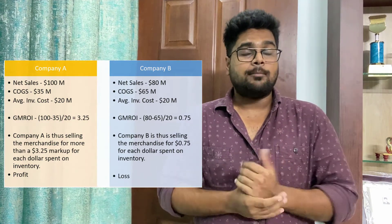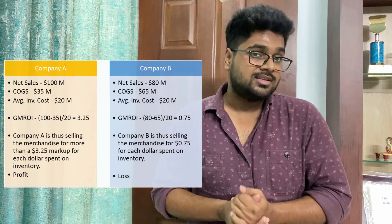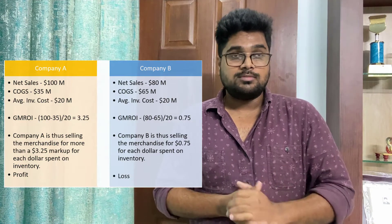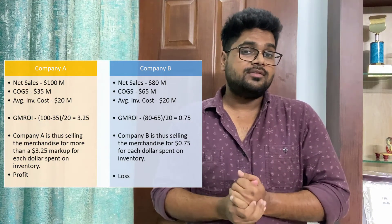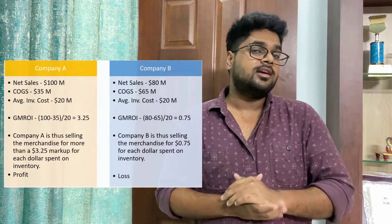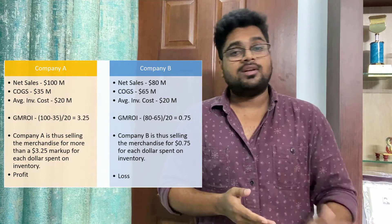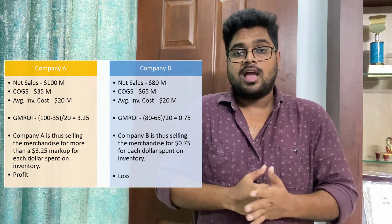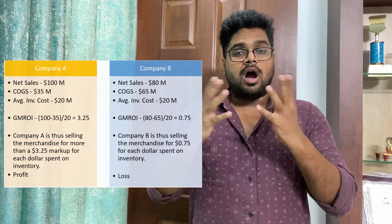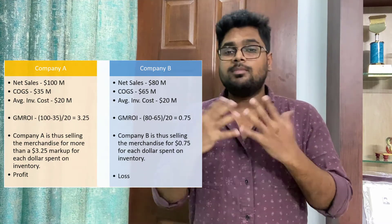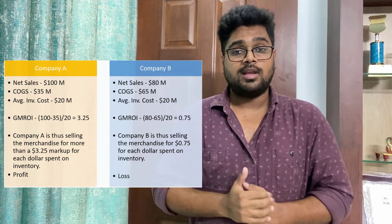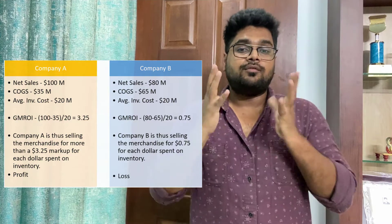So ($80M − $65M) = $15M divided by $20M leaves Company B at 0.75. For every one dollar that the company is spending, it's only earning $0.75 — that's a loss of $0.25 on every dollar. So Company B is definitely a loss-making company, and this is how GMROI gives you a basic idea of how the profitability analysis is going and what initial quick steps need to be taken, with further detailed analysis to follow.